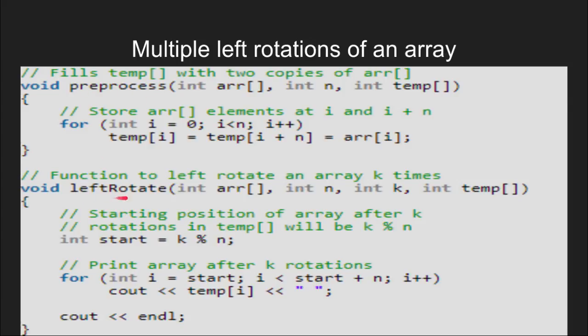Next, we create a function to left rotate the array. The starting position of an array after k rotations will be k mod n in the temporary array, and we store it in an int variable start. After this, we simply print the array after k rotations.